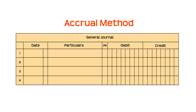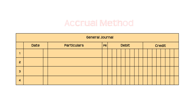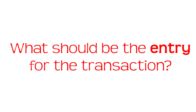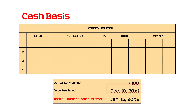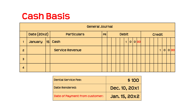Under the accrual method, the amount is recorded immediately as revenue when the service is made, even if you receive the money a few days later. However, when we journalize the transaction under cash basis, there is no journal entry on December 10, 20x1, because you have not received cash. On the day of payment by the customer, a journal entry debiting cash and crediting service revenue will be made, because cash was actually received.